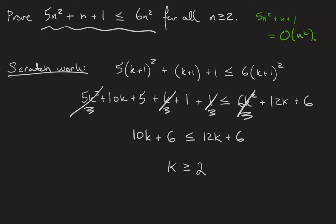Here's how our proof will go. We're going to assume that k is greater than or equal to 2, which tells us that 10k plus 6 is less than or equal to 12k plus 6. Then our inductive hypothesis gives us that 5k squared plus 10k plus 5 plus k plus 1 plus 1 is no more than 6k squared plus 12k plus 6. And we'll be able to regroup that into the desired statement: 5 times (k+1) squared plus (k+1) plus 1 is no more than 6 times (k+1) squared.